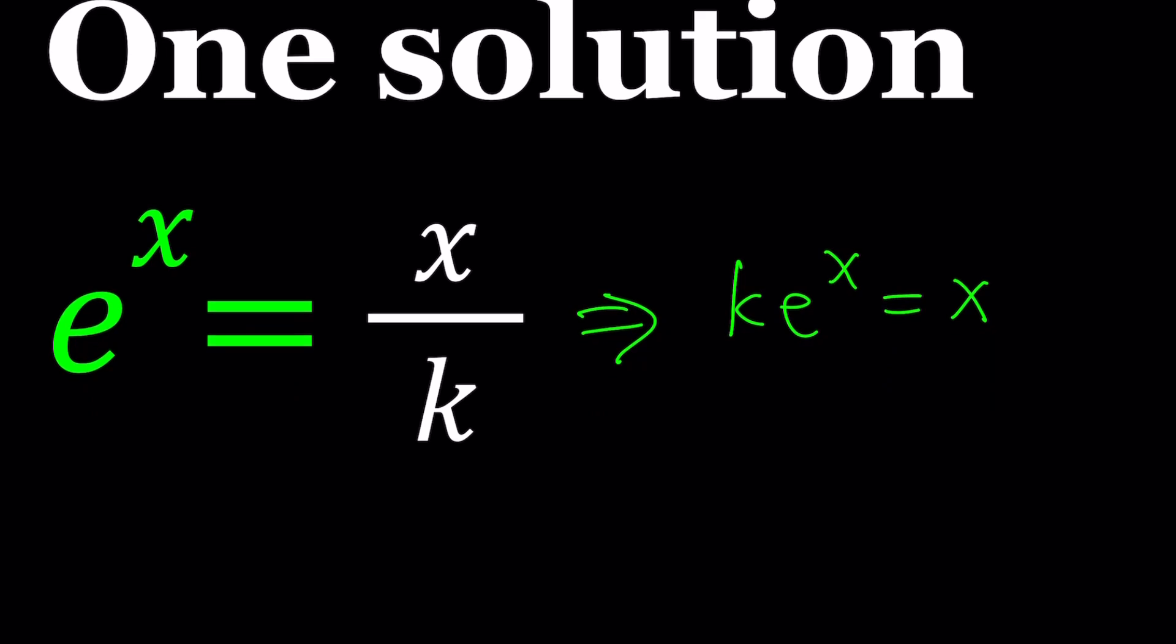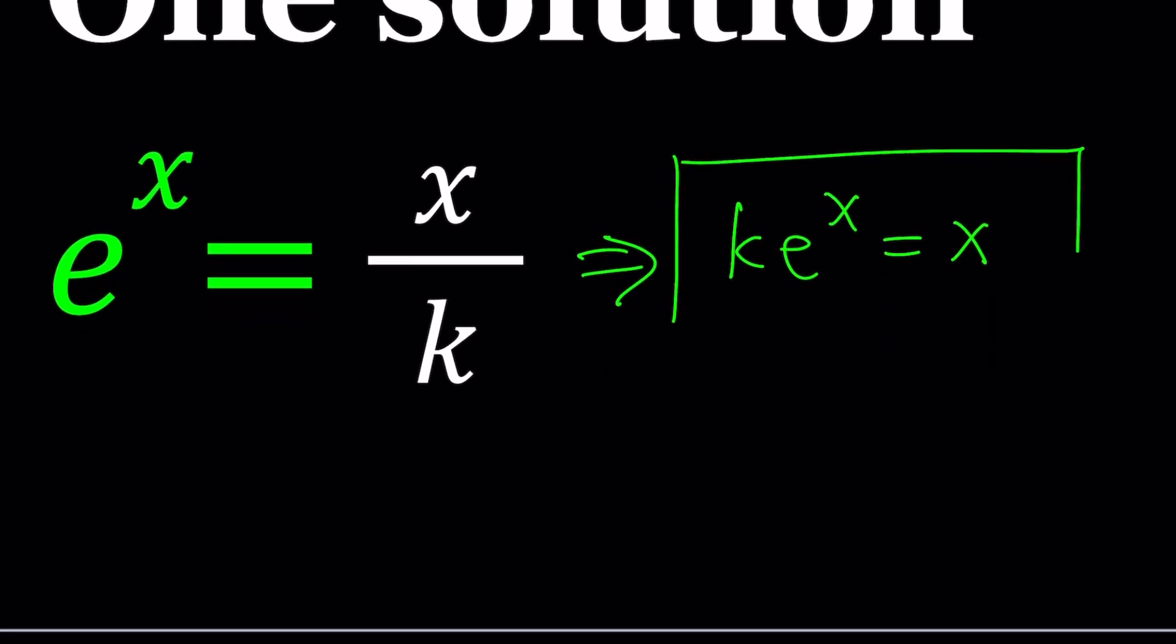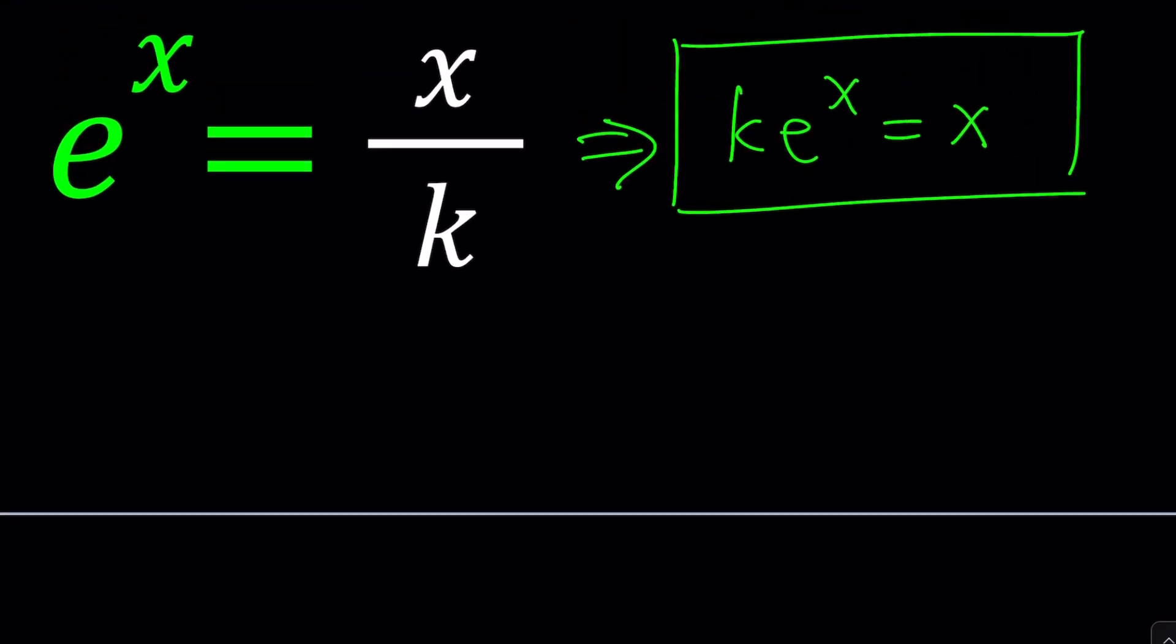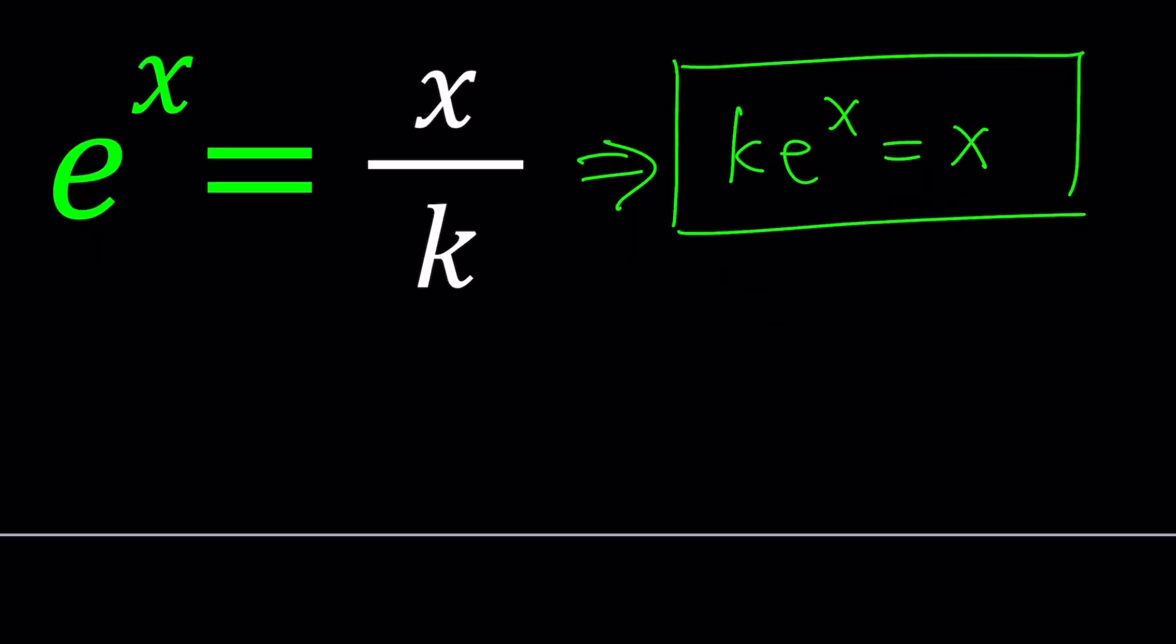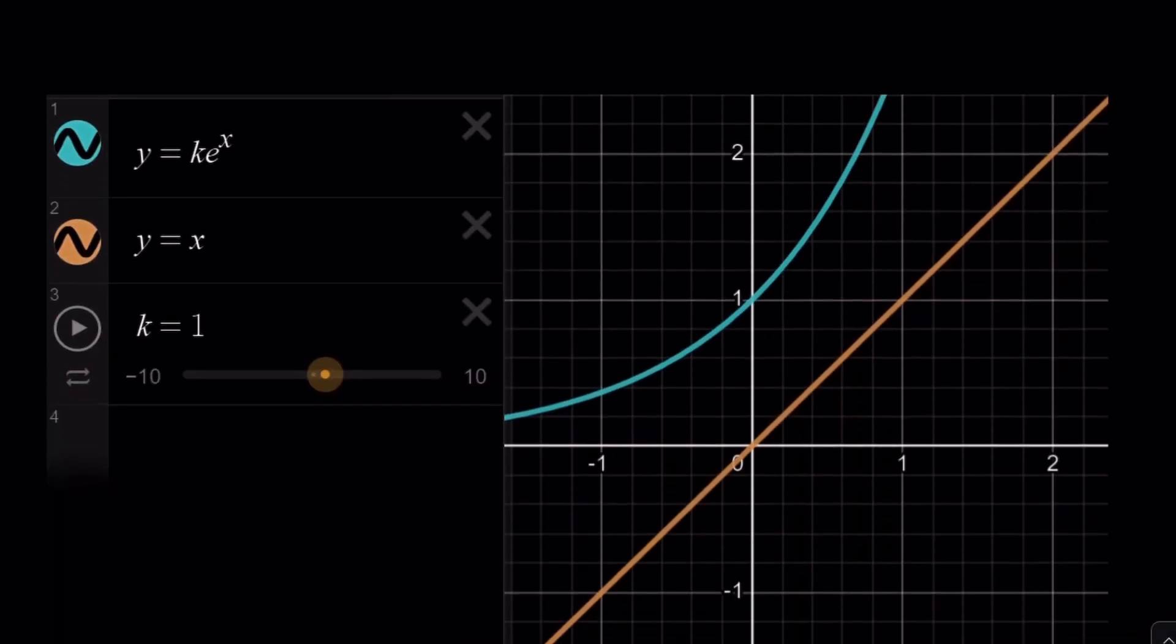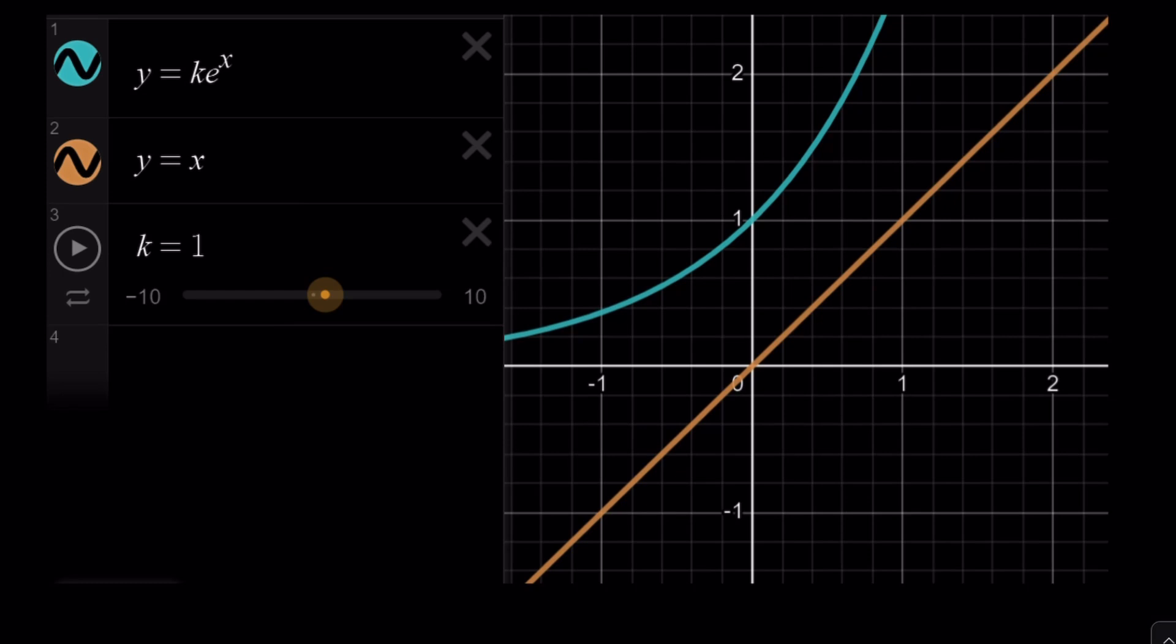So now, we want this equation to have one solution or a single solution. How is that possible? First of all, I want you to take a look at the graph of two functions. What happens if k is equal to 1, and we get e to the x and y equals x? Do they intersect? No. They do not intersect. So this equation has no solution for k equals 1.